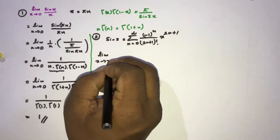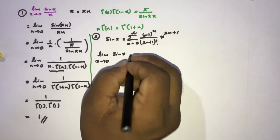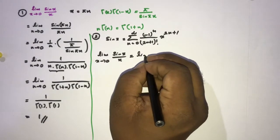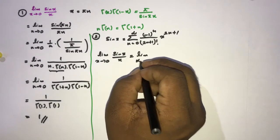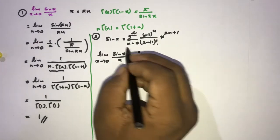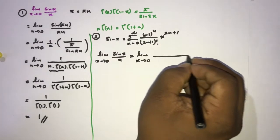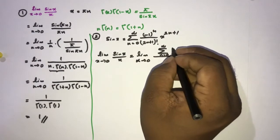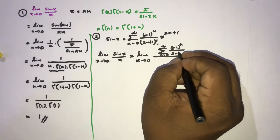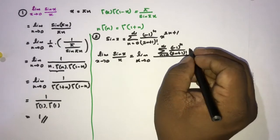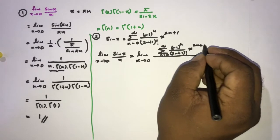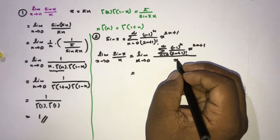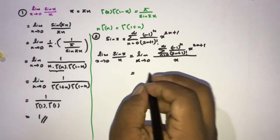Our identity is the limit as x approaches 0 of sin(x)/x. We can write this as the limit as x approaches 0 of the infinite sum from n=0 to infinity of (−1)^n / (2n+1)! times x^(2n+1), all divided by x. We simplify: the x in the numerator and denominator cancel.